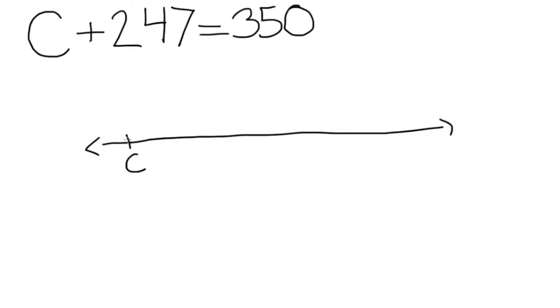And when you add on a number line, you're going to move toward the right. The next step would be to start from your variable and jump 247 to the right of your variable.